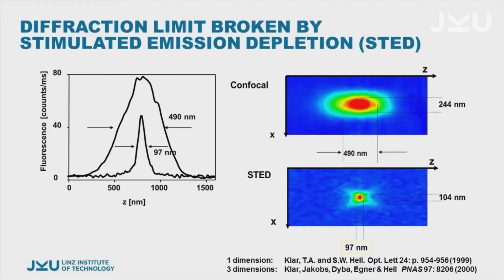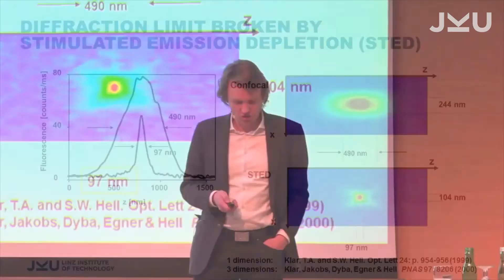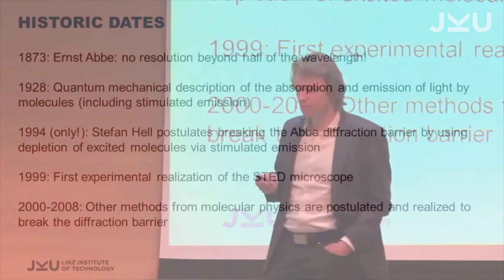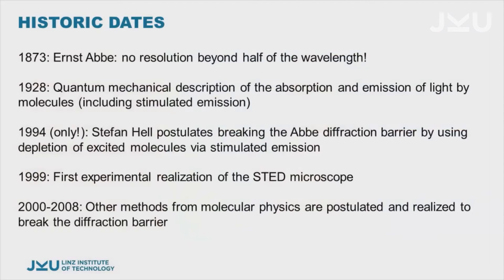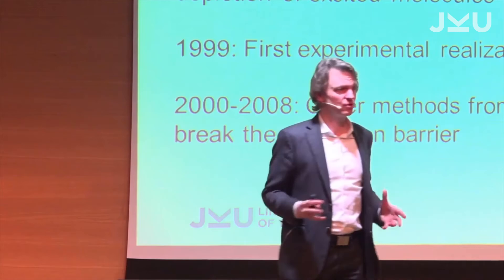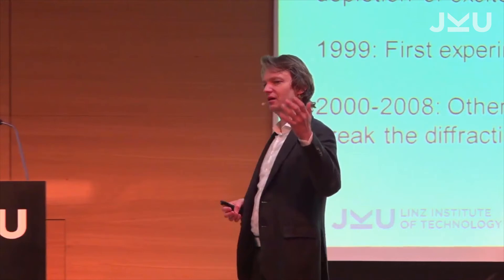Now I have to switch, but just to give you the timetable. In 1873, Ernst Abbe postulated there is a diffraction limit, and everybody learned it. By latest 1928, all the modern physics was known to prove Abbe wrong. But still everybody believed it. Why? Because if a large enough number of people tells you something is true, everybody believes it. The take-home message, if you don't understand anything from the physics: don't believe your professors.